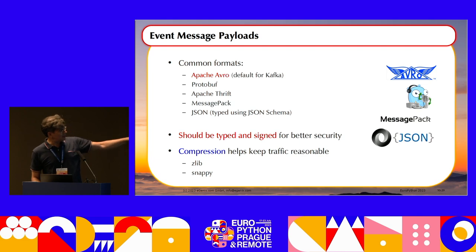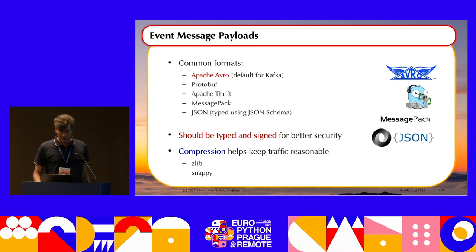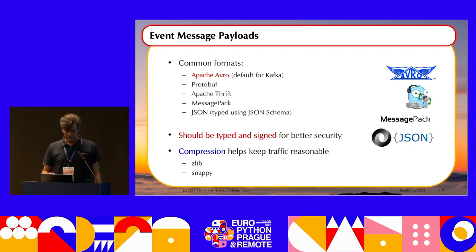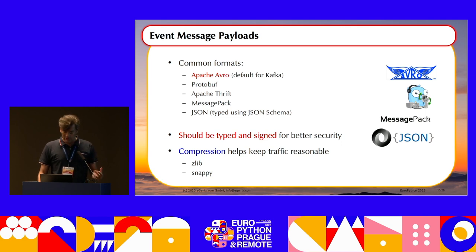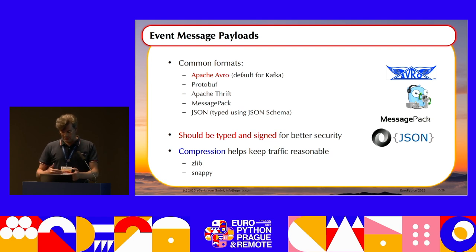For the encoding used on messages, there are common formats. The most common is Apache Avro format, which is the default for Kafka. You can also have other message types — for example, JSON. You need to make sure everything is nicely typed and ideally signed to keep your internal infrastructure secure. Compression is also something you can use to speed things up and avoid bottlenecks.